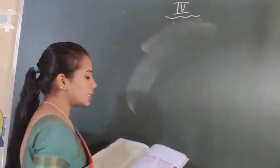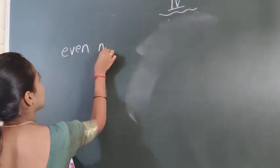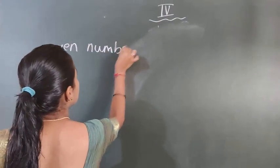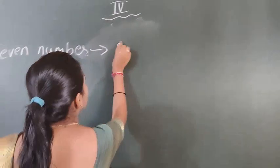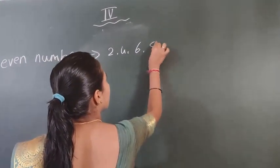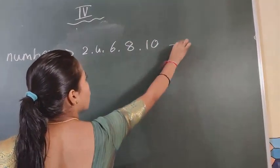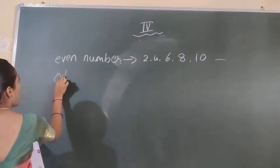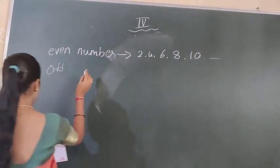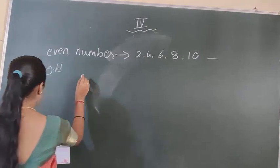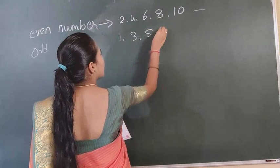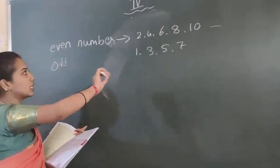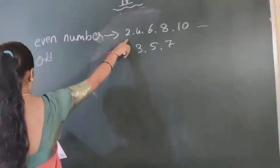See, odd numbers and even numbers. Even numbers are multiplied by 2: 2, 4, 6, 8, 10, and so on. These are the even numbers. Odd numbers are not multiplied with 2, so 1, 3, 5, 7, and so on. These are the odd numbers.